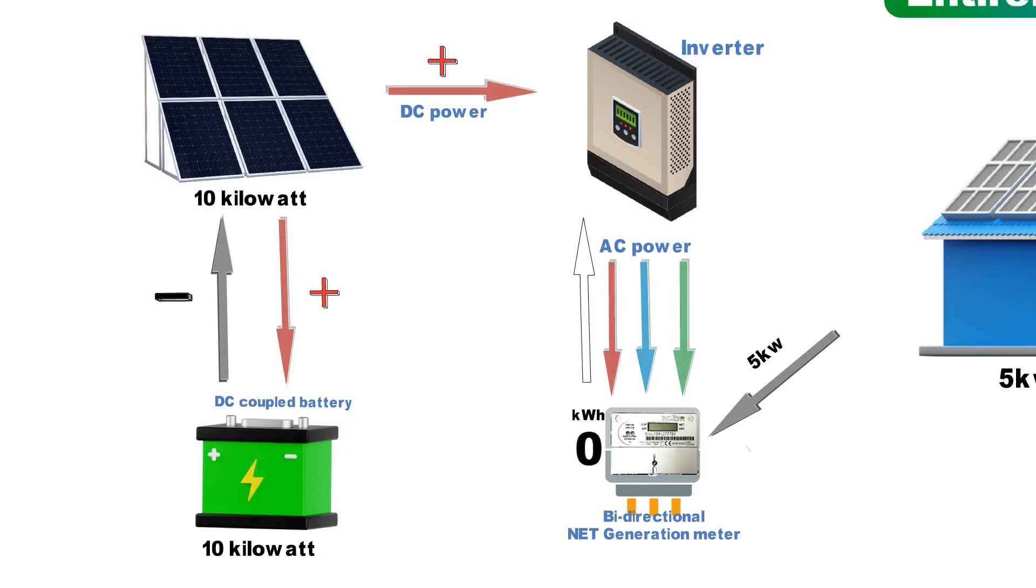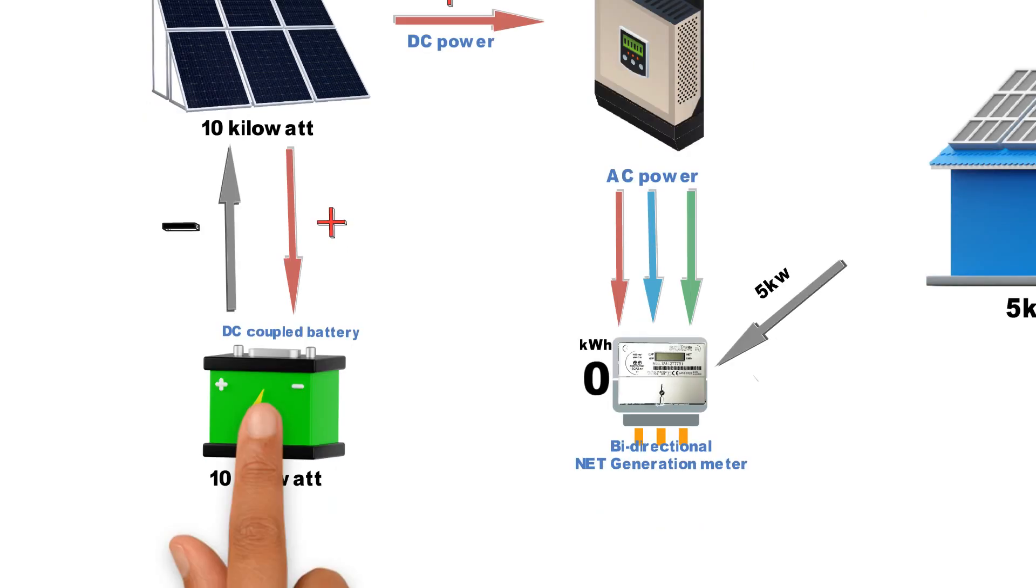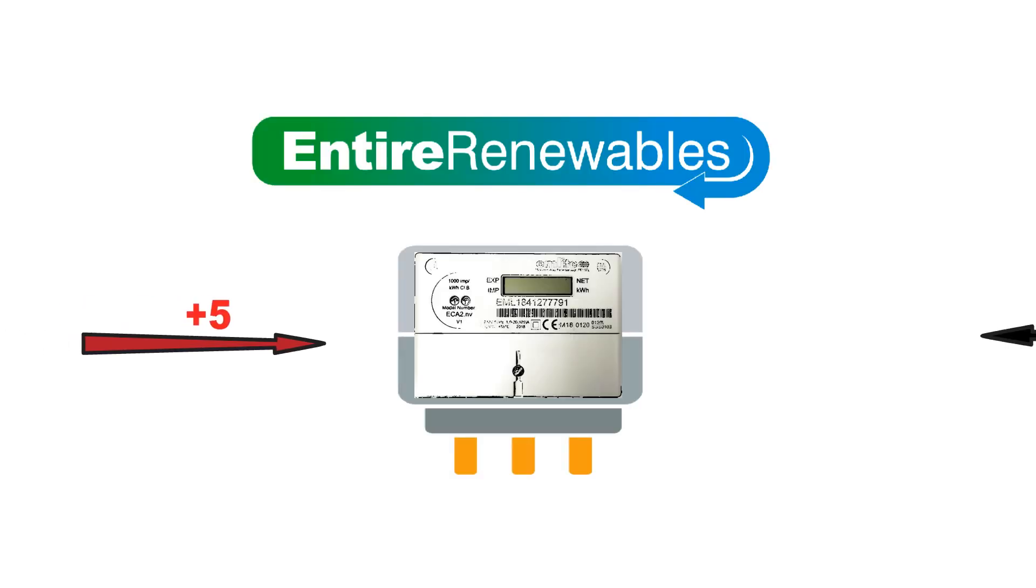However we now have 10 kilowatt hours in the battery which is the same amount as the solar panels generated originally. The bi-directional net generation meter works by subtracting the import from the inverter generation leaving you with a net figure which is the solar panel generation only.